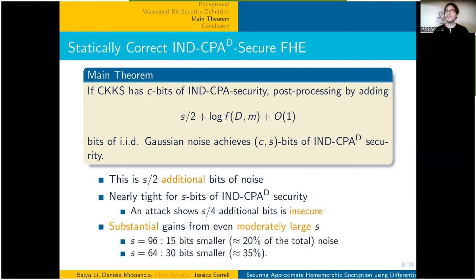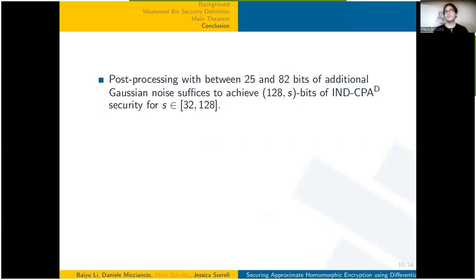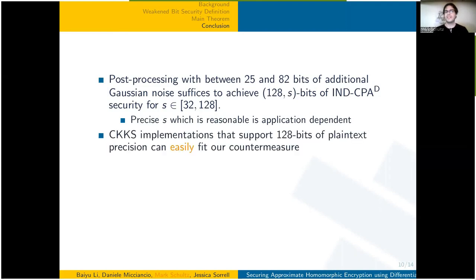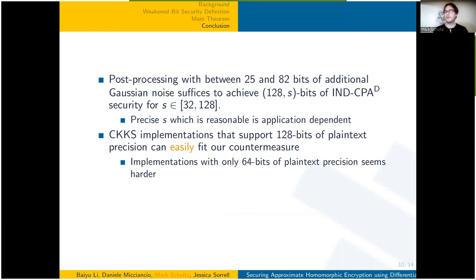While we apply this to the setting of FHE, we expect this to be broadly applicable whenever one is combining a computational primitive — in our case FHE — with some statistical primitive. CKKS implementations that support 128 bits of plaintext precision can easily fit our countermeasure. Implementations with only 64 bits of plaintext precision may be more difficult to secure; while one can secure them by choosing small enough S or by exposing less plaintext precision to users of the library, this may make CKKS in these small precision settings less competitive with other FHE schemes.